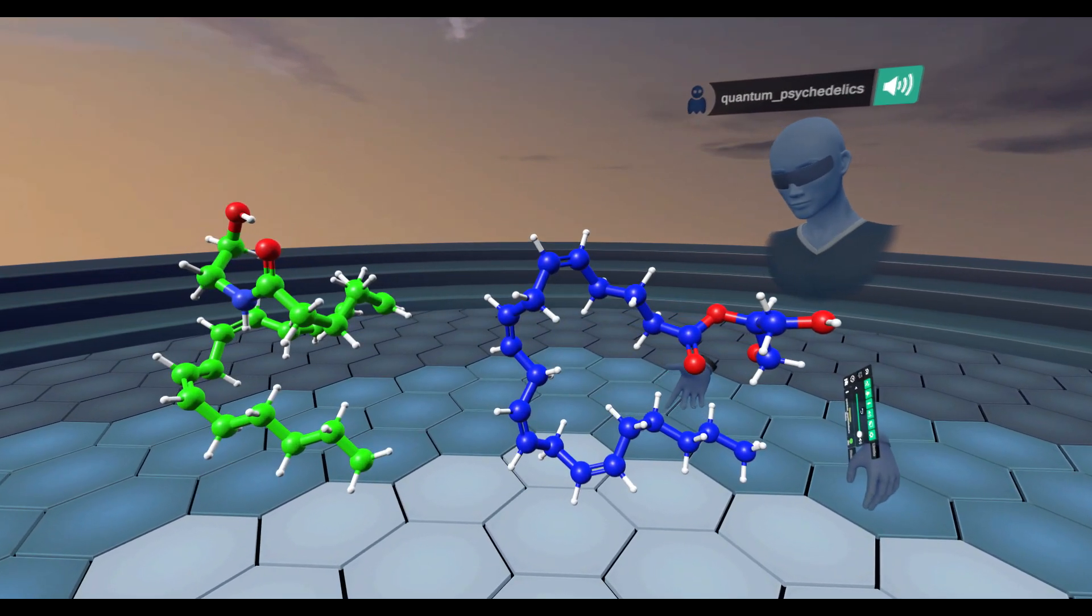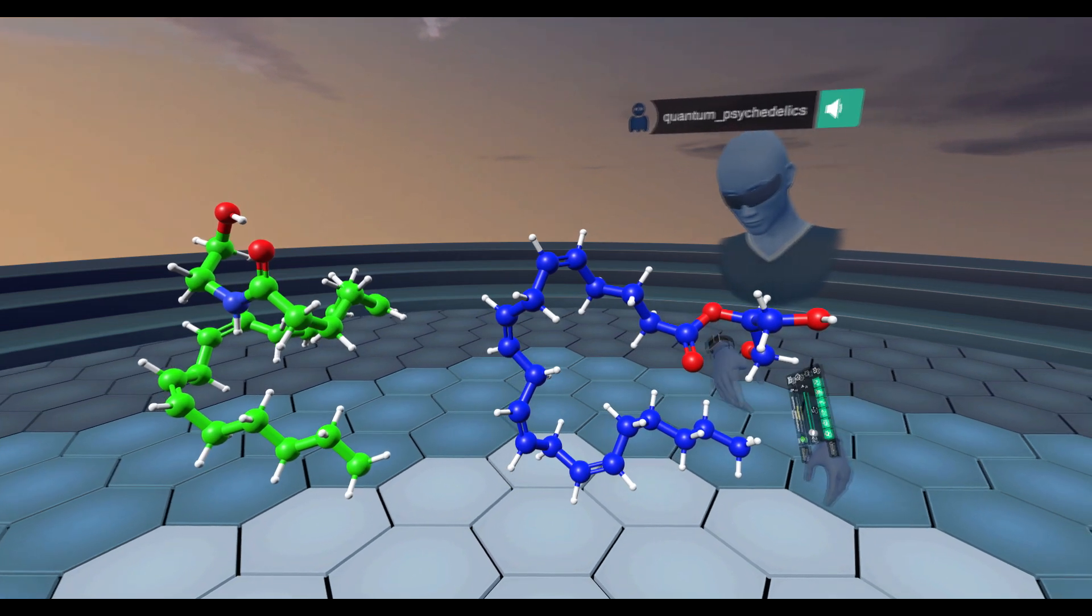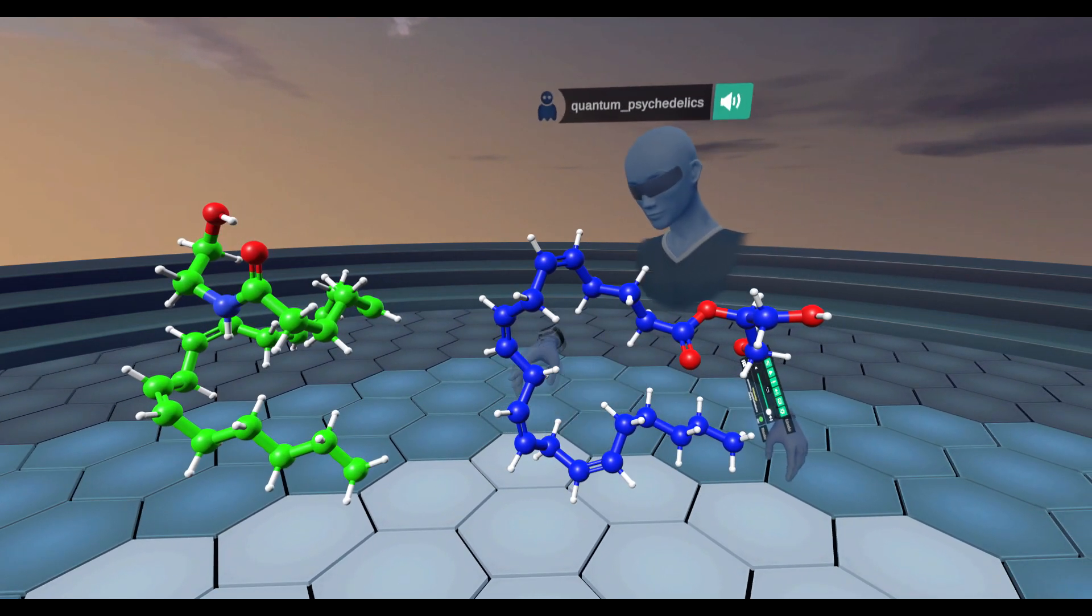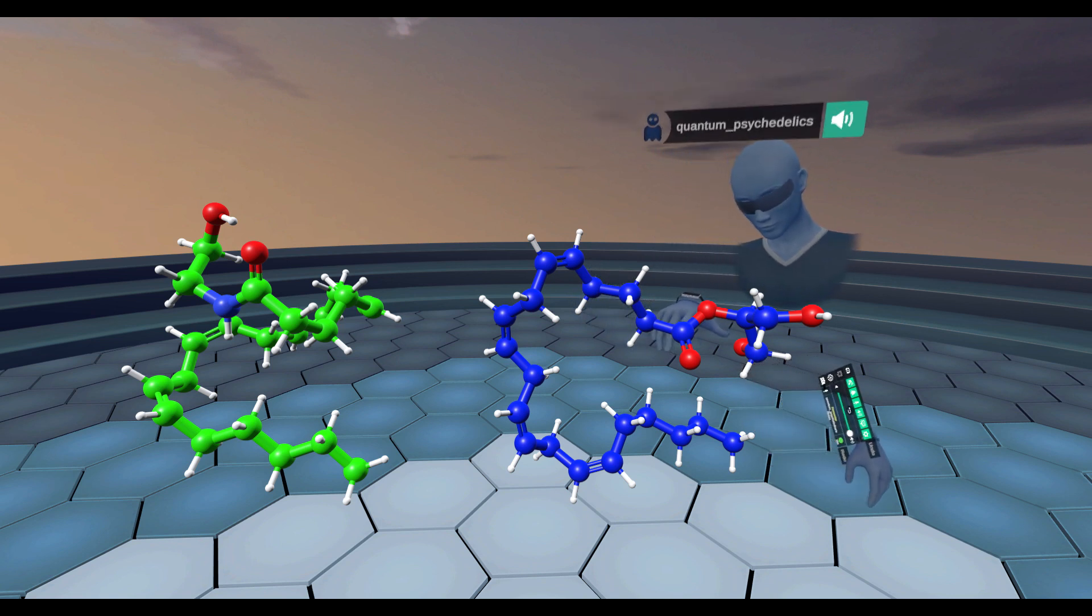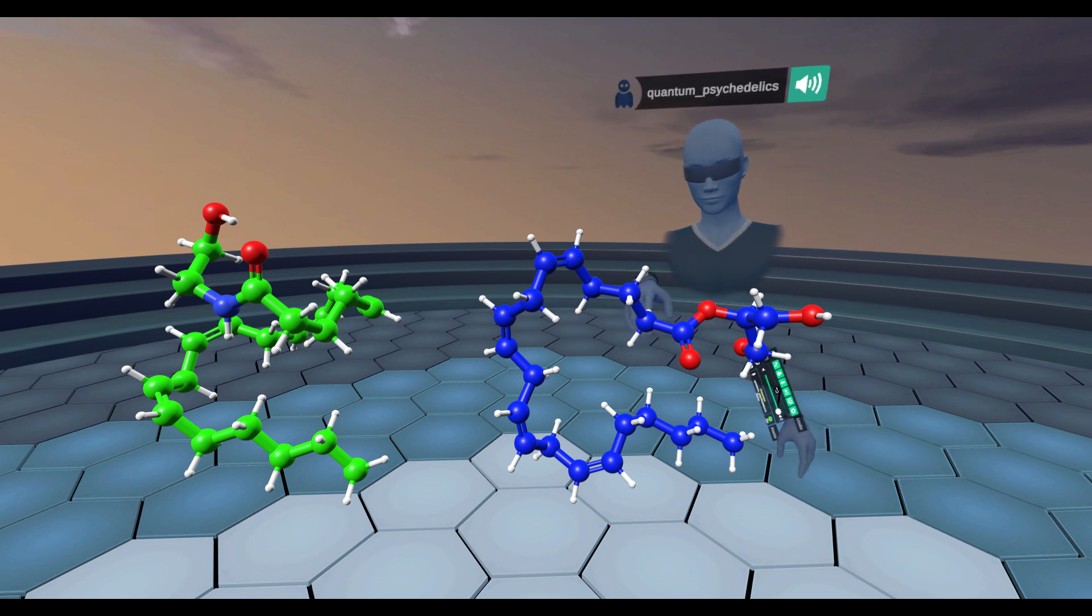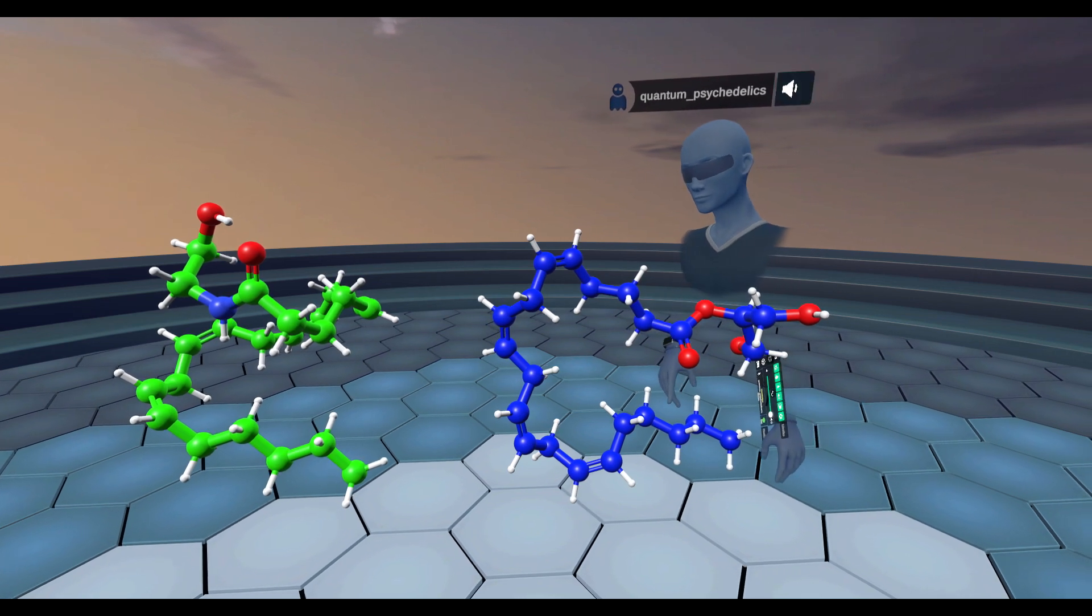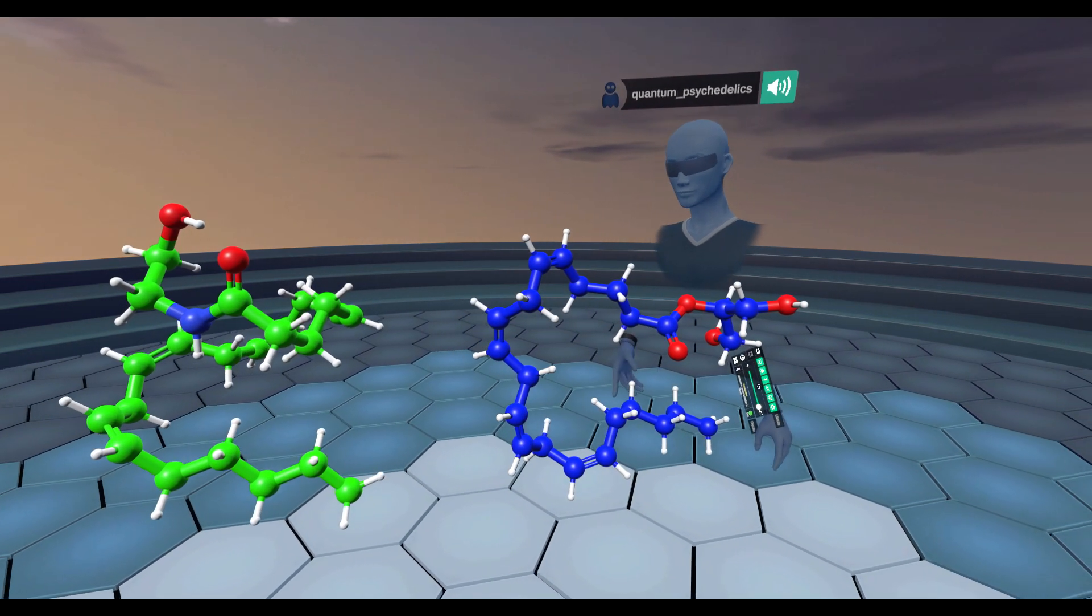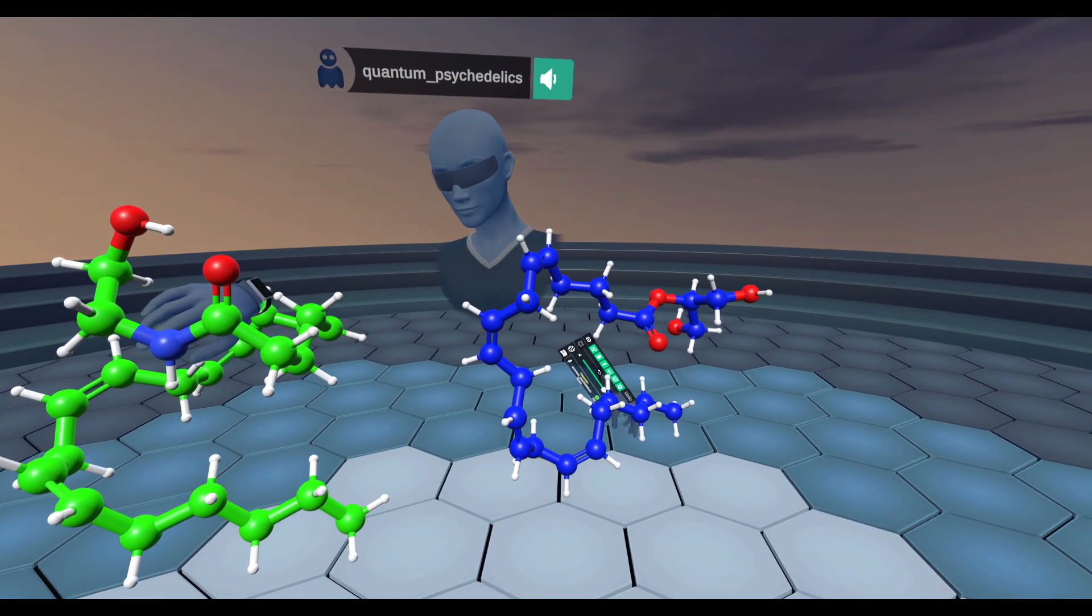Both of these molecules are fatty acids with fatty acid chains. They both have the same amount of carbons up until this point right here, where 2-AG has an ester functional group coming off of the carbon, and anandamide has an amide functional group.